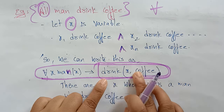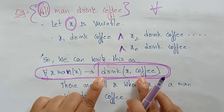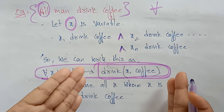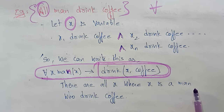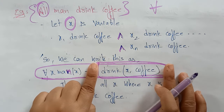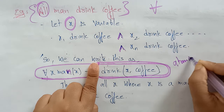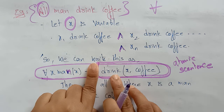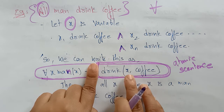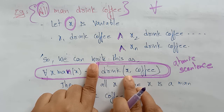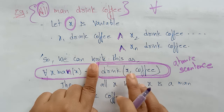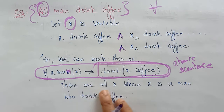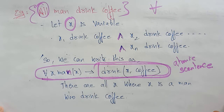'Drink' is a predicate and 'x' and 'coffee' are the terms, making this an atomic statement — atomic because we are not using any connectives. So 'for all x where x is a man who drinks coffee' represents 'all men drink coffee.' This is an example of the universal quantifier. In the next video, I'll take more examples to explain universal and existential quantifiers.